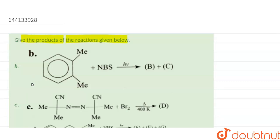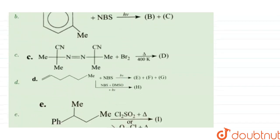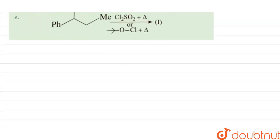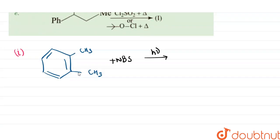The question asks us to give the products of the following reactions. Let us consider the first compound. NBS — N-bromosuccinimide — performs bromination at the allylic carbon.